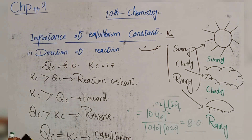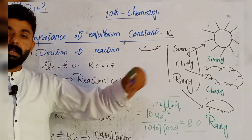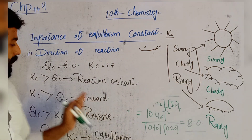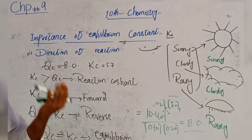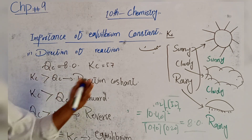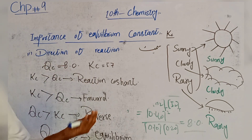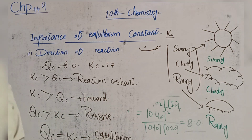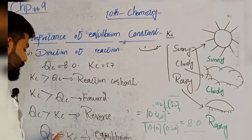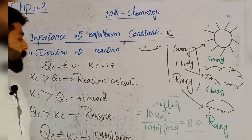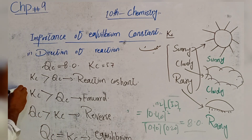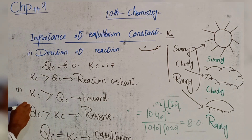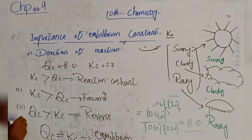وضاحت: جب Kc > Qc ہو تو reaction forward direction میں ہوگا کیونکہ reactants زیادہ ہیں۔ جب Qc > Kc ہو تو reaction reverse ہوگا کیونکہ products زیادہ ہیں۔ اور جب دونوں کی state equal آ جائے تو equilibrium کی حالت آ جاتی ہے۔ یہ ہمارے تین مختلف cases ہیں۔